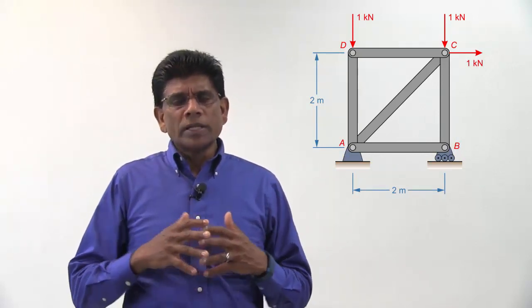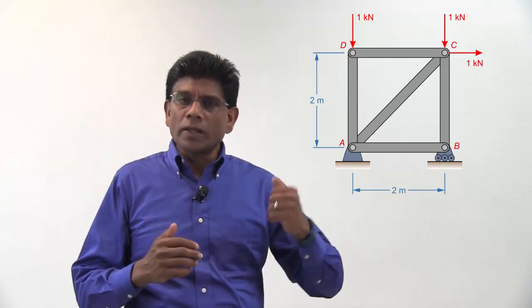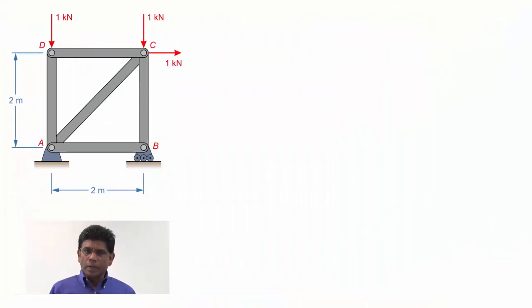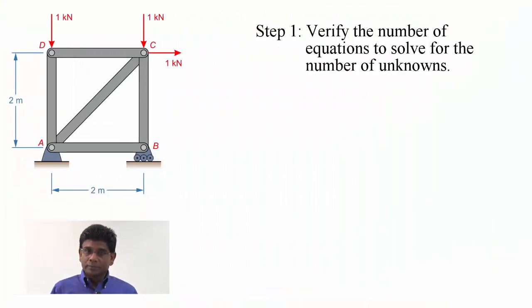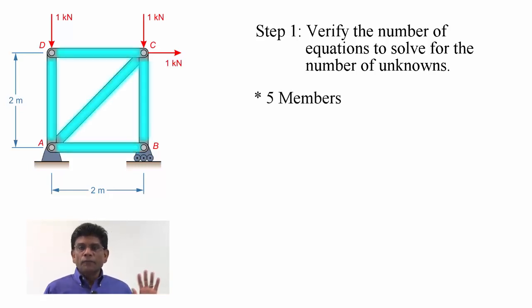Let's go through a step-by-step process to solve this problem. Step number one. Let's first check the relationship to verify if we have enough number of equations to solve for the number of unknowns in this problem. If you look closely, there are five members and four joints in this truss.